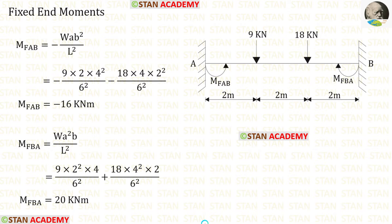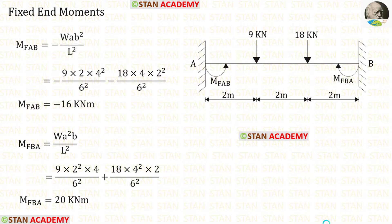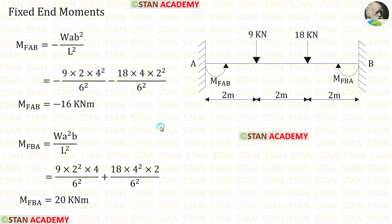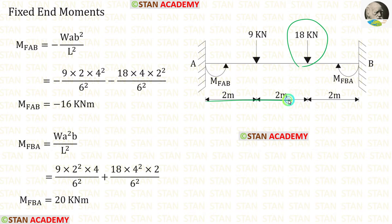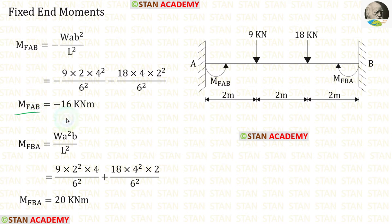Now let us find the fixed end moments. First in span AB, which has two eccentric point loads of 9 kN and 18 kN. The formulas are minus WAB² upon L² and positive WA²B upon L². For the 9 kN load A is 2 and B is 4; for the 18 kN load A is 4 and B is 2. After calculation, M_AB = −16 and M_BA = +20.